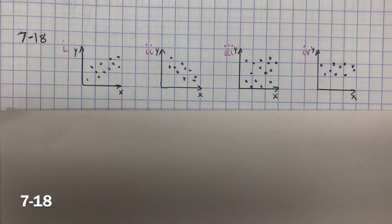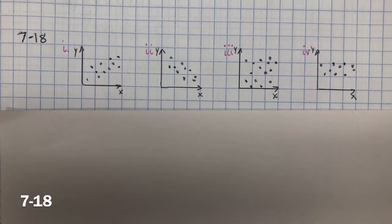In 7-18, you need to look at the scatter plots and determine which statement fits each scatter plot. In A, a city's average daytime temperature in January and its latitude.